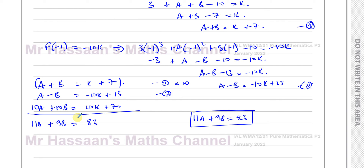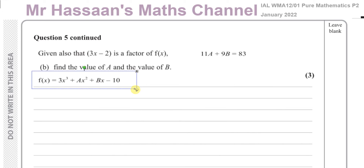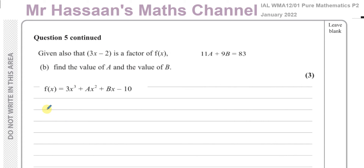Now for part b: given that 3x minus 2 is a factor of f(x), find the values of a and b. We have f(x) equals 3x cubed plus ax squared plus bx minus 10. Since 3x minus 2 is a factor, substituting the value that makes this bracket zero into the function gives zero — the remainder is zero when something is a factor, and non-zero when it is not.